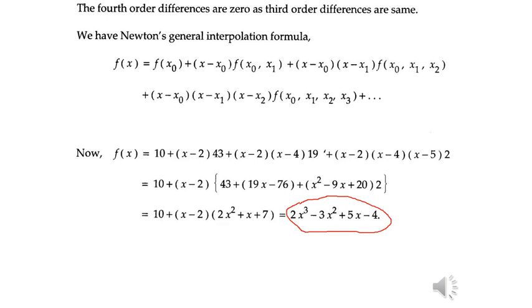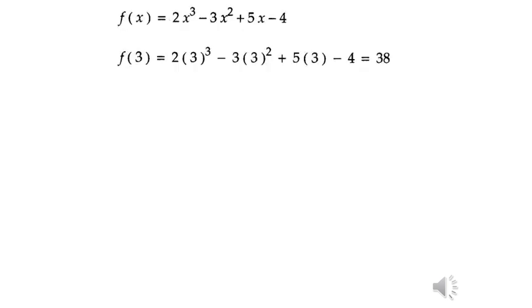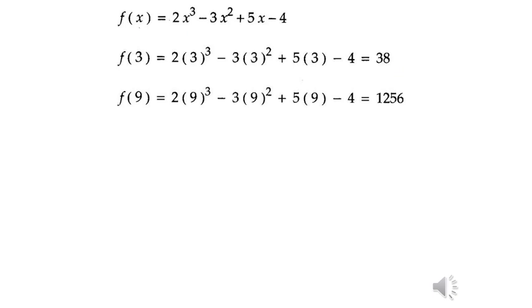This completes the first half of the problem. This is the required interpolation polynomial. Now we need to find the value of f(x) at x equal to 3: put 3 wherever x appears and we get f(3) equal to 38. Similarly, they are asking us to find f(9): put 9 wherever x is and get the value. So this completes the problem.